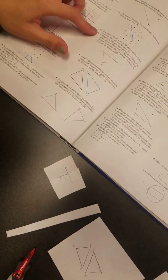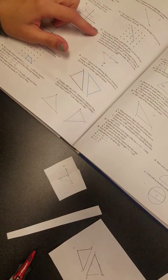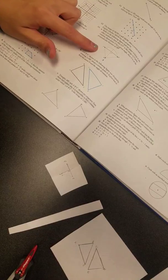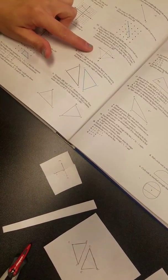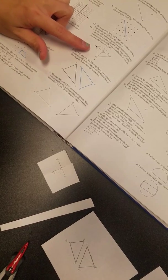Part A says, refer to the following figure and use paper folding or any other method to show that P prime is the image of P under rotation about point O by a given angle. Then O is on the perpendicular bisector of segment P, P prime.